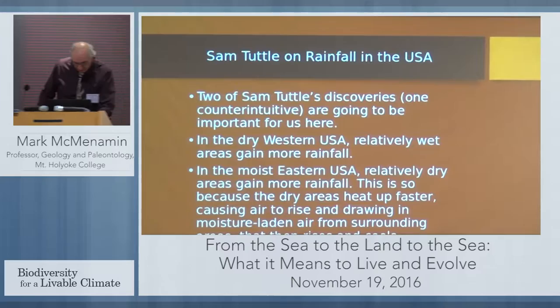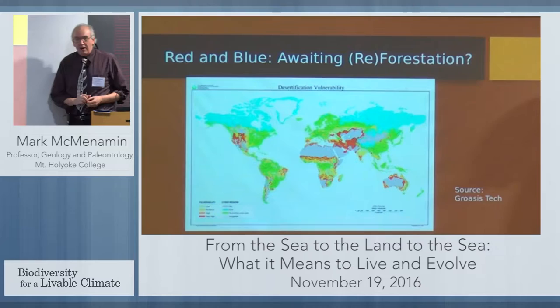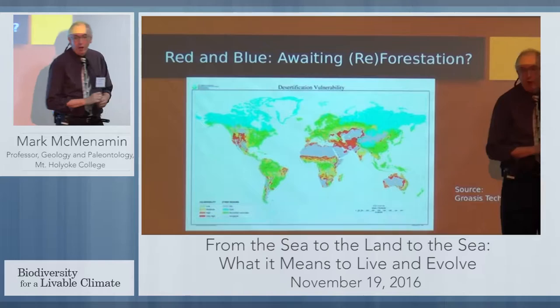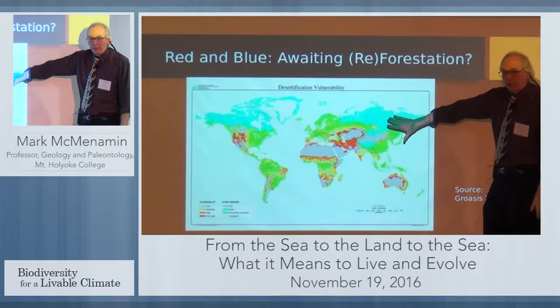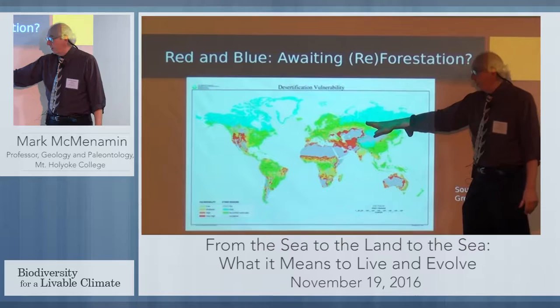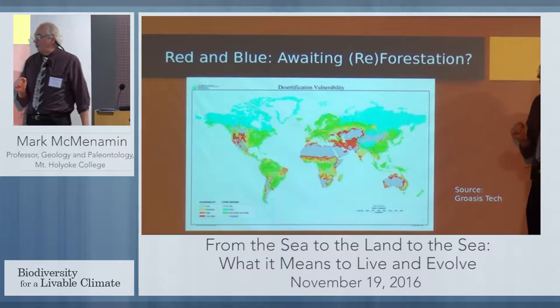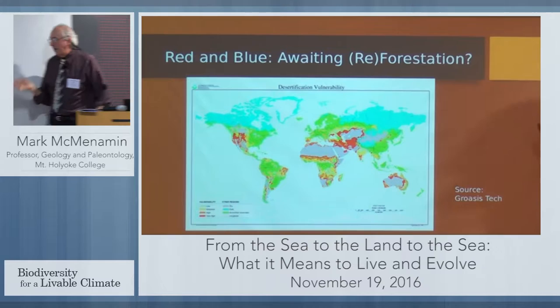What that implies is that we have areas on the planet that are potentially exploitable in terms of increasing the forestation of the planet. These red areas — I'm particularly thinking of the western United States — and also the blue areas that are cool, which are going to be moving into warmer climate zones as global warming increases, are potentially areas where reforestation could take place. This could, by the Columbian Exchange example, potentially have a beneficial impact on the global carbon budget.